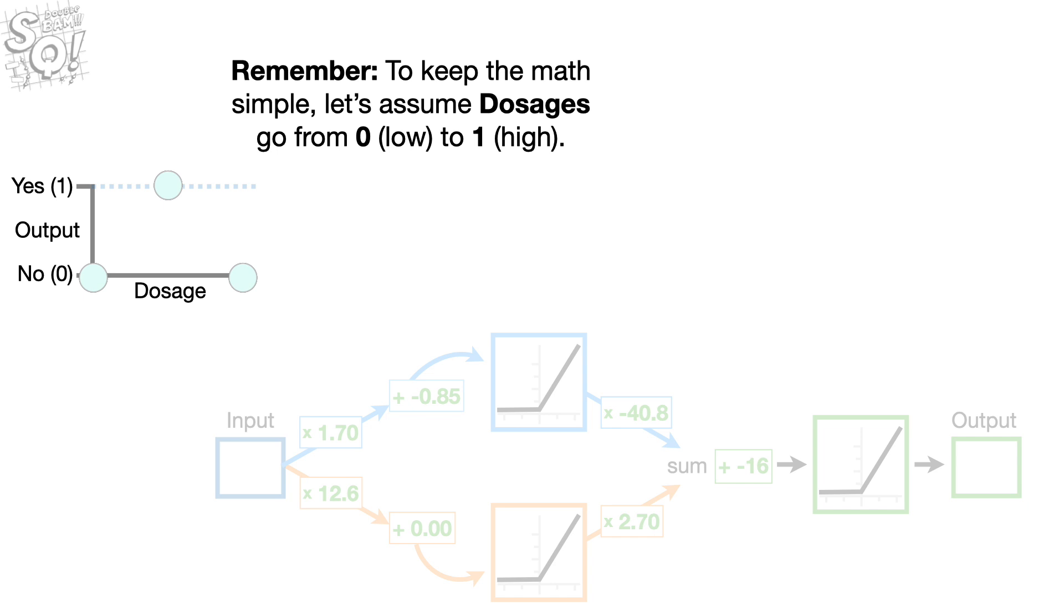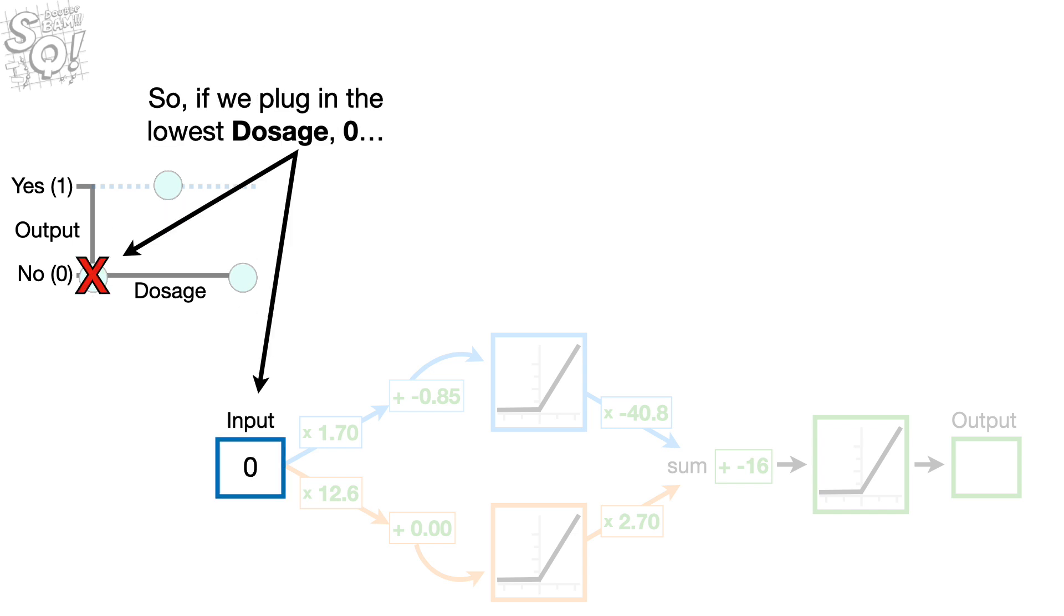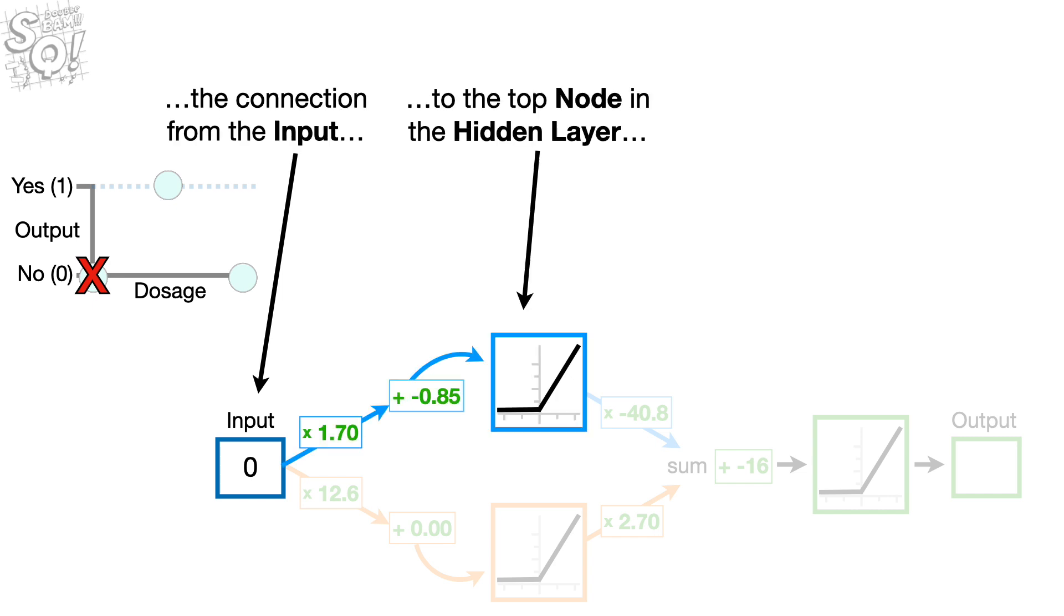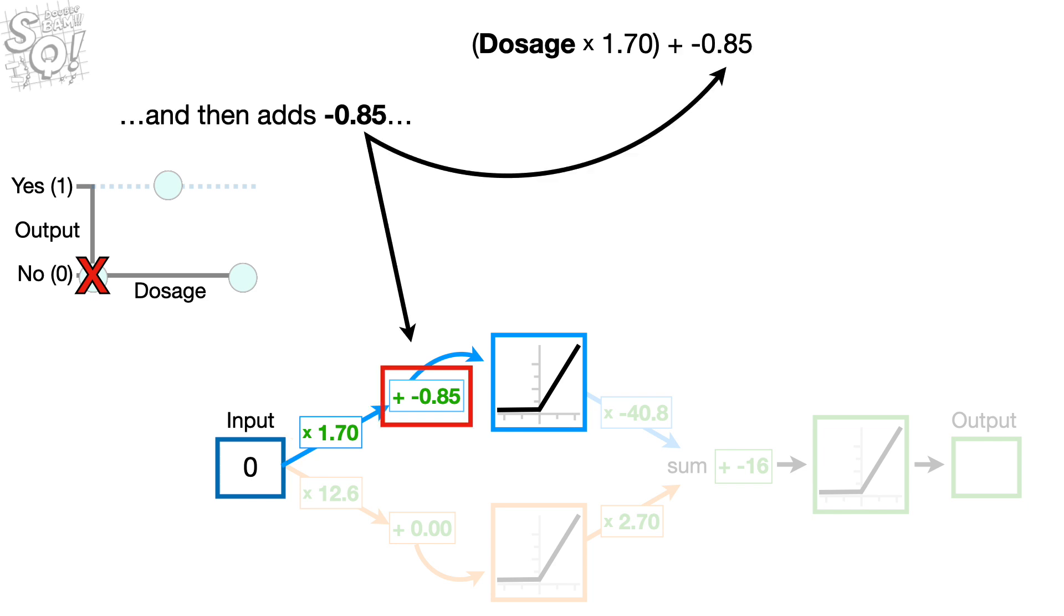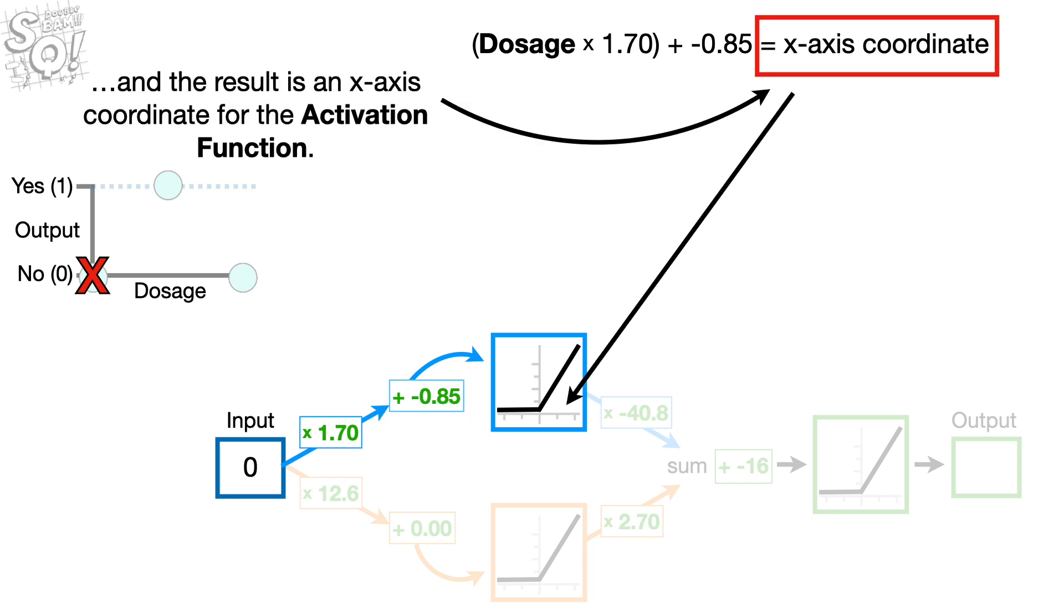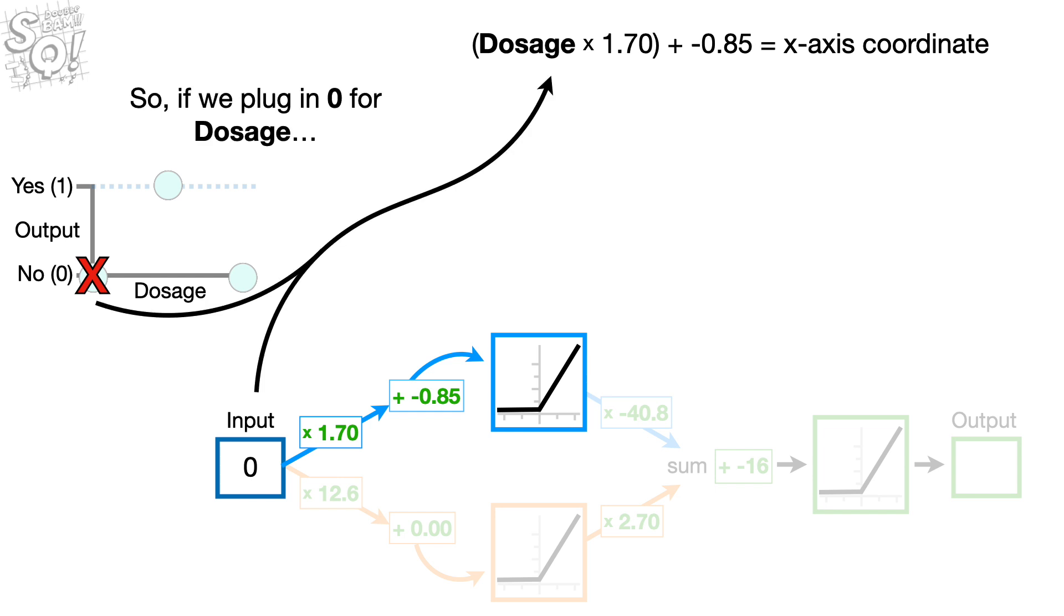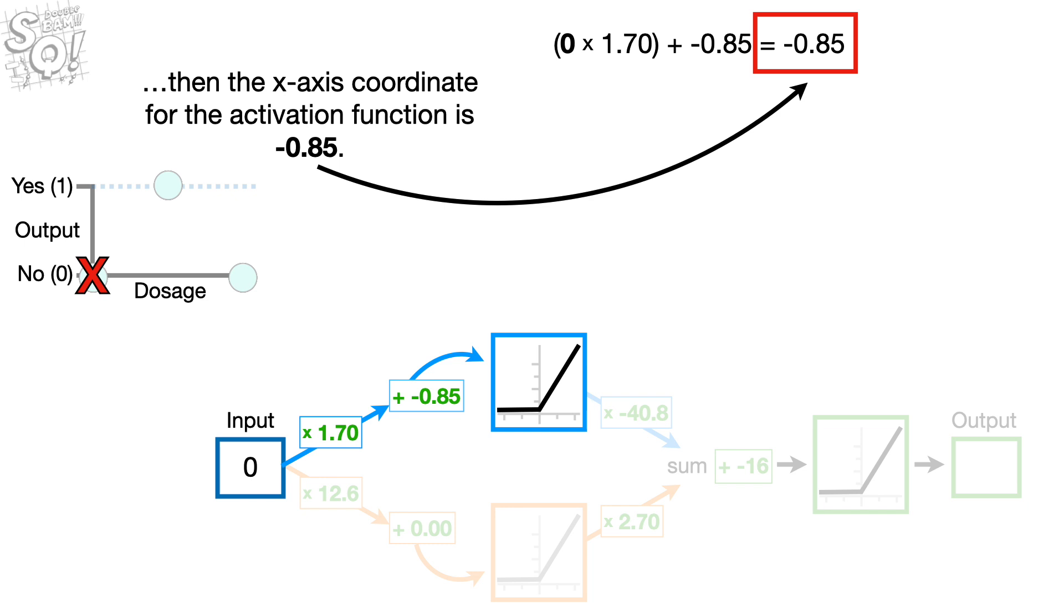Remember, to keep the math simple, let's assume dosages go from 0 for low to 1 for high. So if we plug in the lowest dosage, 0, the connection from the input to the top node in the hidden layer multiplies the dosage by 1.70 and then adds negative 0.85 and the result is an x-axis coordinate for the activation function. So, if we plug in 0 for dosage, then the x-axis coordinate for the activation function is negative 0.85.